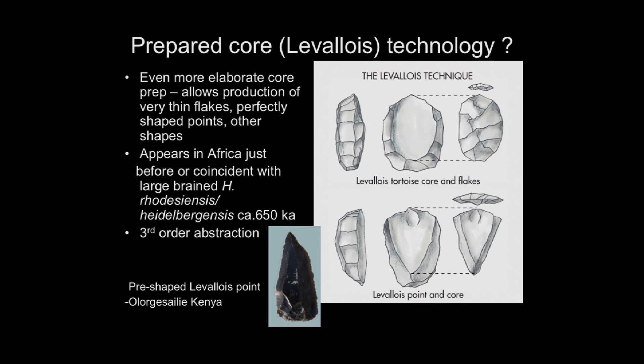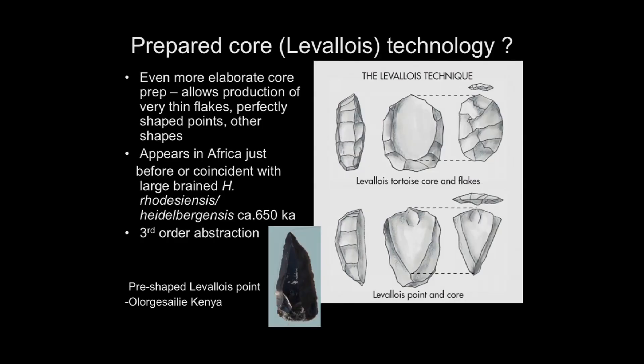Just a picture of what these prepared cores involve: they allow the production of very thin flakes and points shaped on the core. This technology appears in Africa just before or at the same time as the first specimens of Homo heidelbergensis, about 650,000 years ago. It's a very abstract idea to go not from a lump of stone to the finished piece, but to the core that is then pre-designed to knock off one of these special flakes. This is a pre-shaped Lavallois point from Elorga Sali, just to show you a real one.